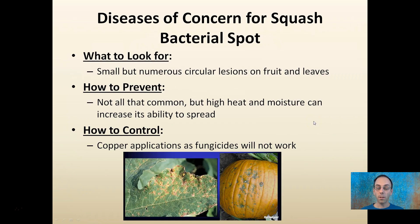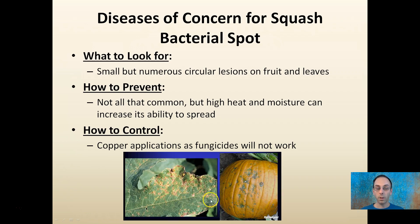Bacterial spot is the last one we're going to talk about here. You want to look for small but numerous circular lesions on the leaves, which can also appear on the fruit. It's not all that common, but high heat and moisture can increase its spread. Copper applications would be advised, because fungicides will not work — just keep in mind, this is a bacterial disease.